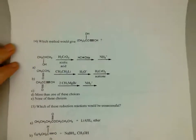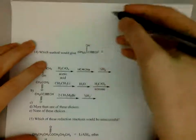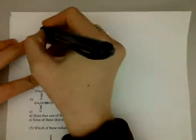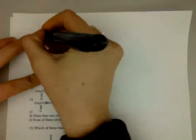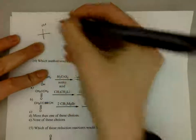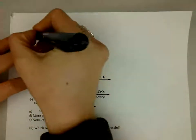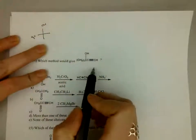Let's get started for question 14. Which method would give this? Now this is kind of a weird structure, so I'm going to draw it out for you. We've got that carbon. It has an OH. It has two CH3s.